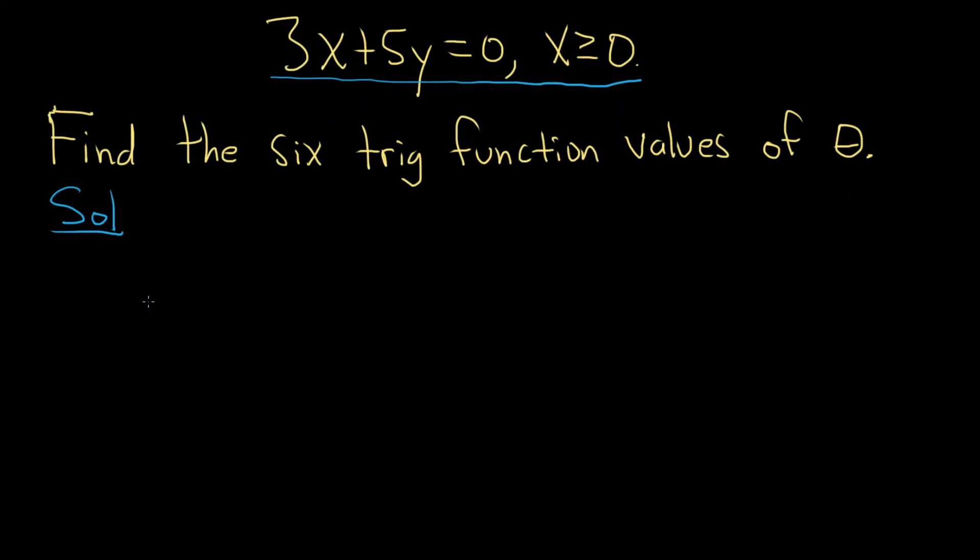So we need to start by finding a point on this line. We can pick any value of x we like as long as it's positive. It does say greater than or equal to zero here, but if you pick zero, you're just going to get zero for both and you won't be able to do the problem. So you want to pick one that's positive. I'm going to pick something strategic. So 3x plus 5y equals zero. Let's solve this in a nice way so we can subtract 3x from both sides. So we get 5y equals negative 3x. And if we divide by 5, we would get y equals negative 3 fifths x.